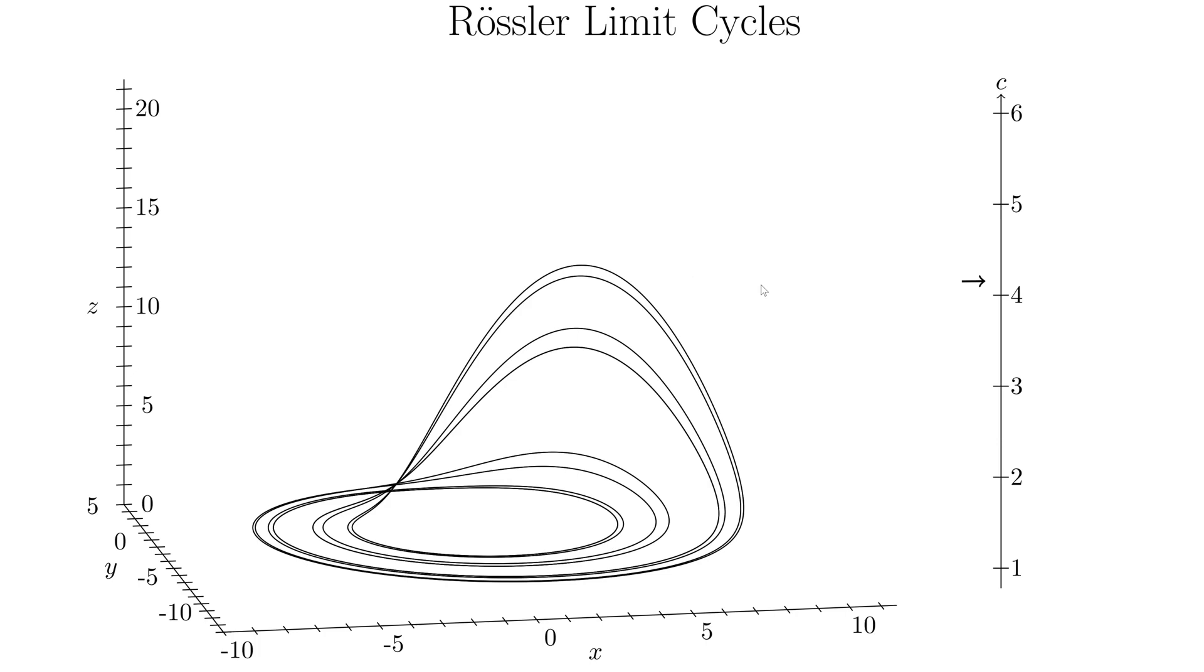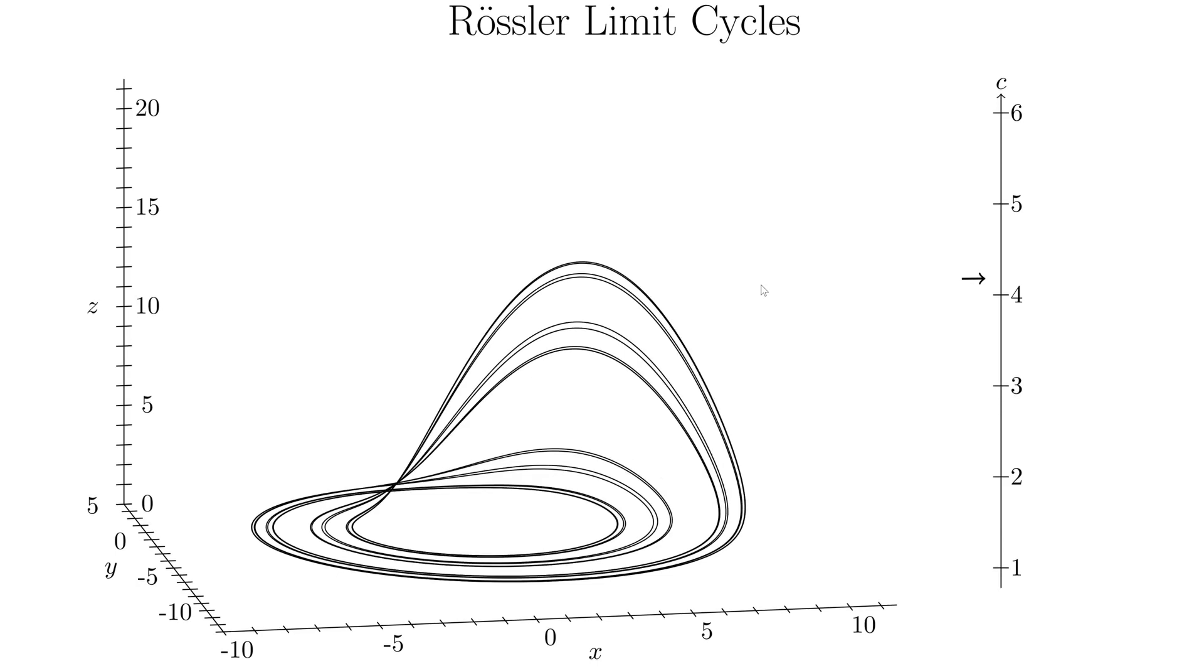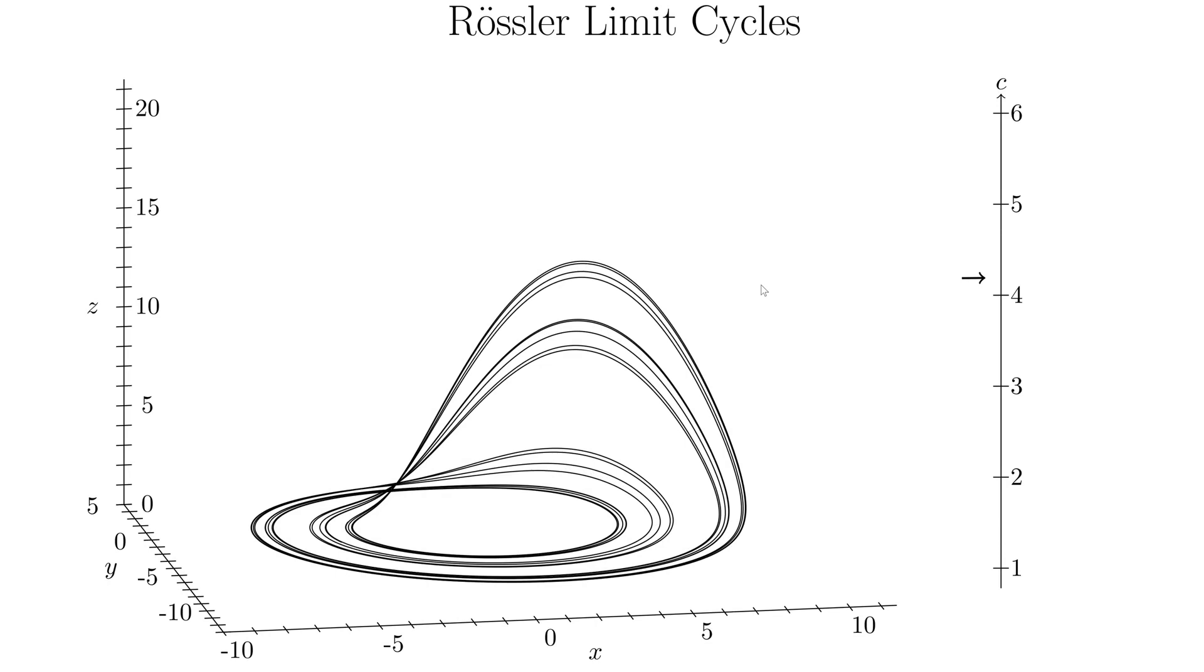And this is actually how the strange attractor gets formed. So the period doubling bifurcations, I think there's even, yeah, there's another one right now. So then you had 8 before, so now it's going around 16.